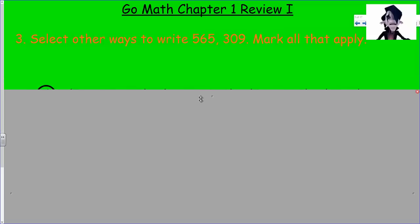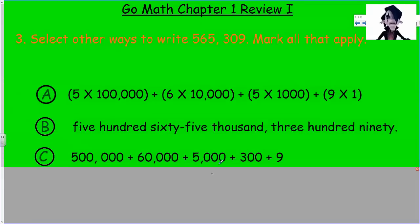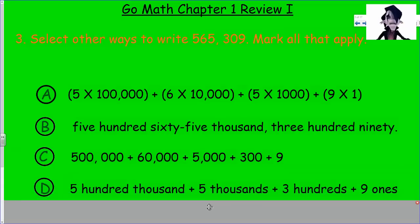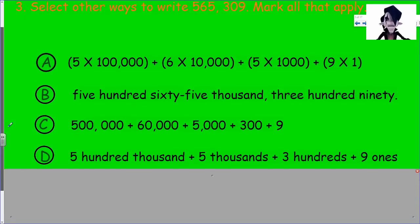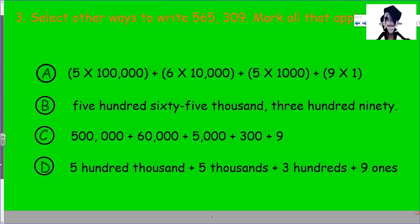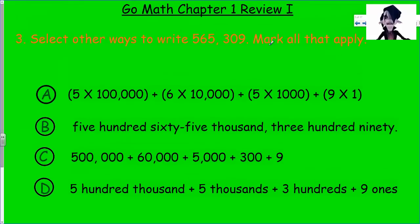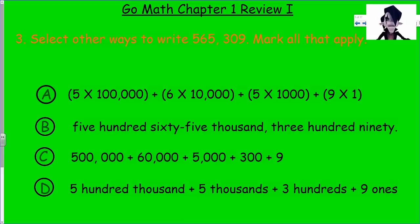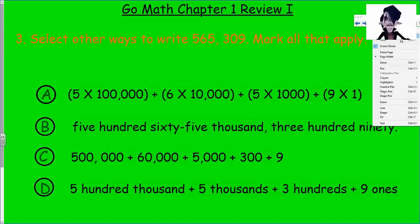Now we look at number three. This is all review, so kind of been-there-done-that. It says select other ways to write five hundred sixty-five thousand three hundred nine. It says mark all that apply, meaning there could be more than one answer — possibly all of them, or just one, or none. We have to be very careful on these.